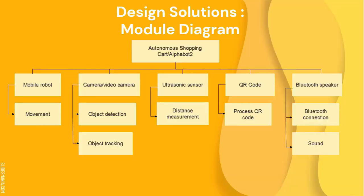Moving on to the module diagram, there are five modules for this project. The first one is the mobile robot, which covers the movement of the mobile robot. The second one is the camera, which is able to detect and track objects. The third module is the Ultrasonic Sensor, which measures the distance between the pattern and the mobile robot. The fourth is the QR code module, able to process QR codes. And the last one is the Bluetooth speaker, which connects via Bluetooth and outputs sound.